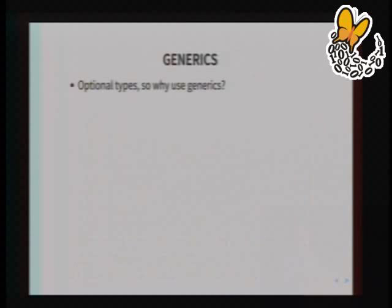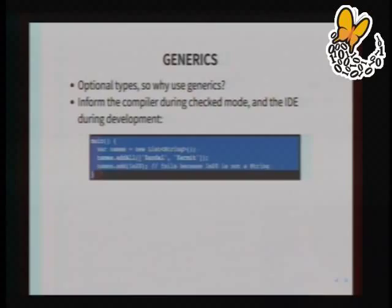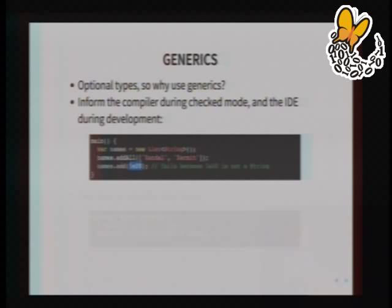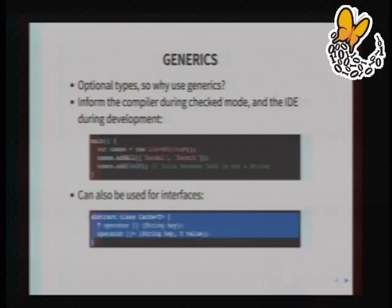Why use generics? Because you can indicate to the compiler that something is only ever going to be a list of strings, so the IDE gives hints about available methods, and in checked mode if you try to put a number in as one of those values it will throw an exception. You can also use generics for interfaces — here's a cache of type T where I don't even know what that type will be. I can import this into many different classes that need a cache of numbers or strings, overloading the get and set of an array or hash with my own code.